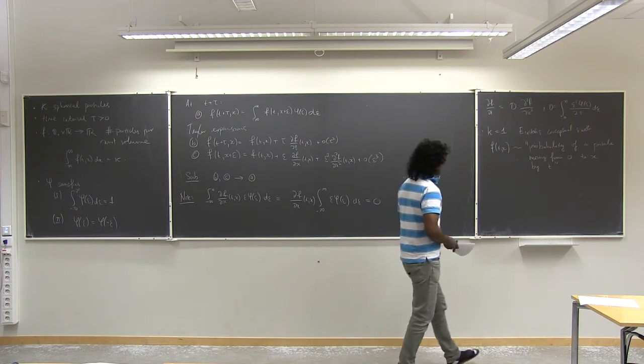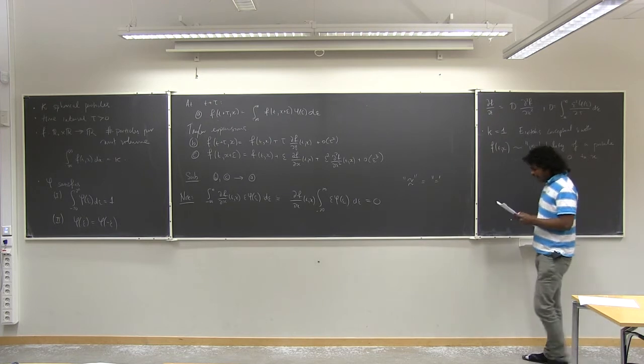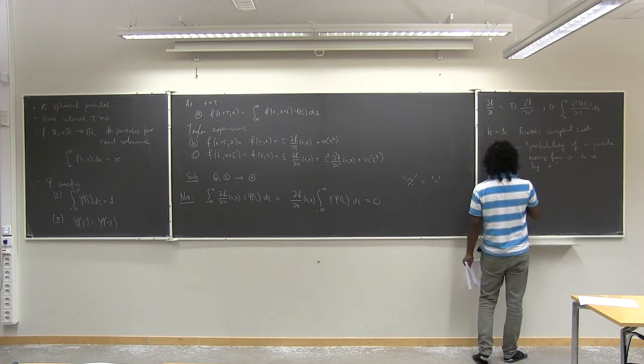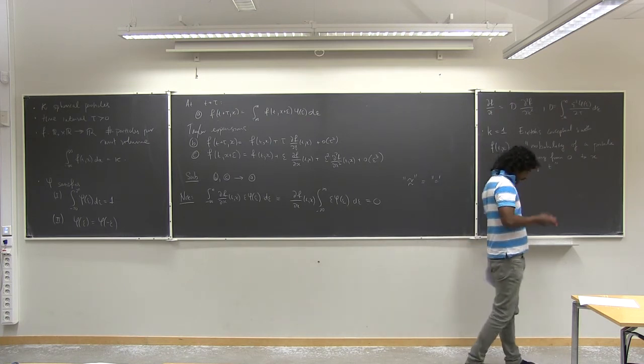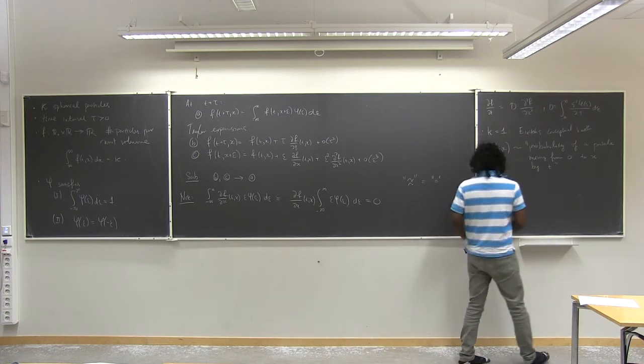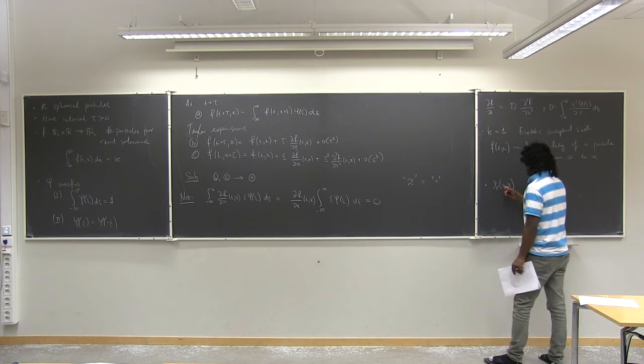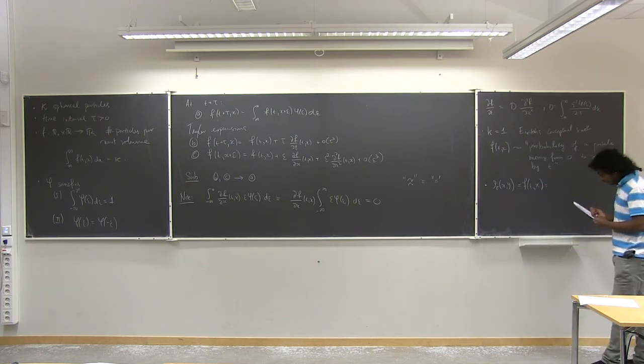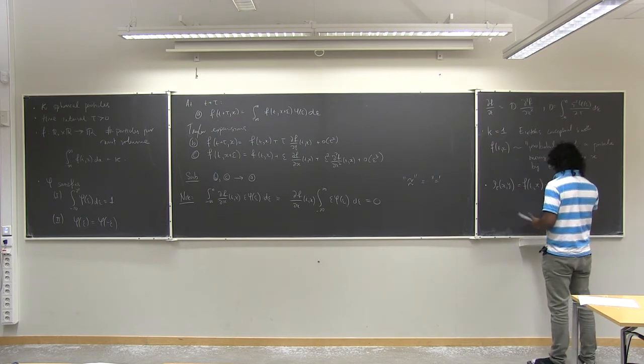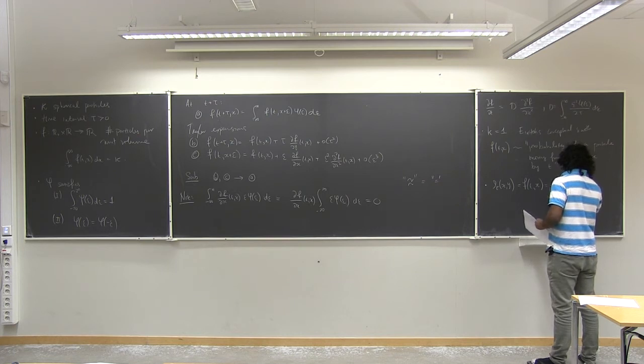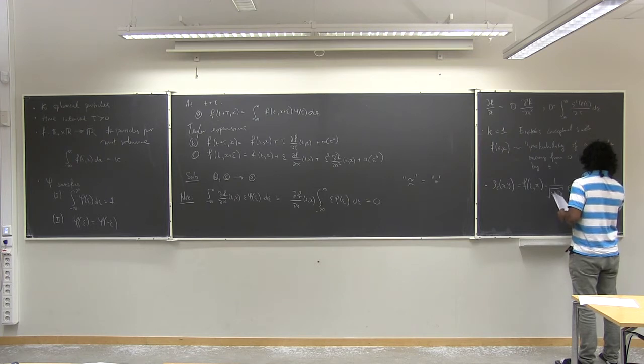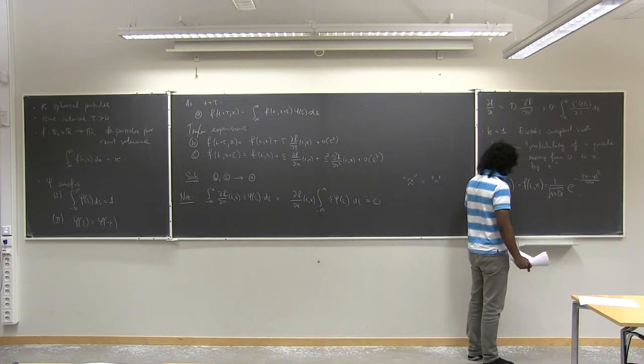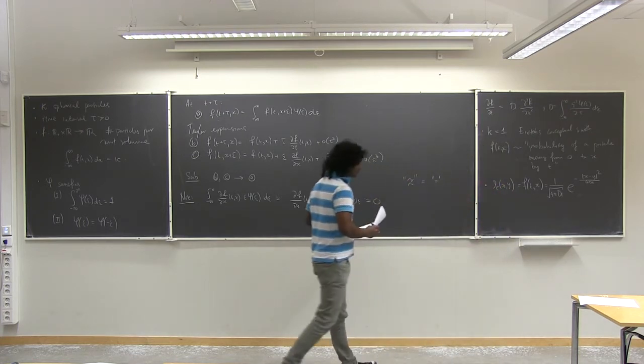And the idea of Einstein's conceptual switch, so thinking about this being particles per unit volume to when k equals to 1, Einstein says that f of t, x is the probability of a particle moving from 0 to x by time t. And, in fact, this expression, we can write down this expression, but moreover, because we have translation invariance in Euclidean space, that f is just a real variable, we can write down the probability that a particle is going to move from x to y, in fact, we can write this expression explicitly. So, let me just give you this expression.